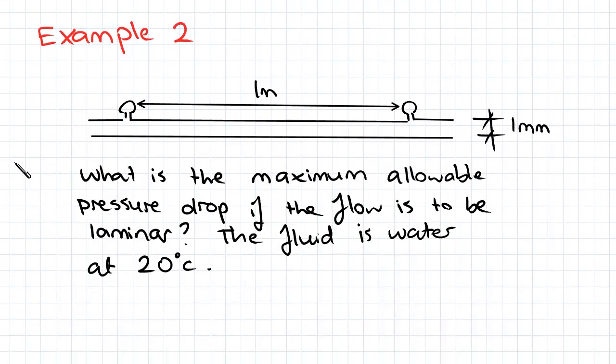Here's our second example. What is the maximum allowable pressure drop if the flow is to be laminar? The fluid is water at 20 degrees Celsius.